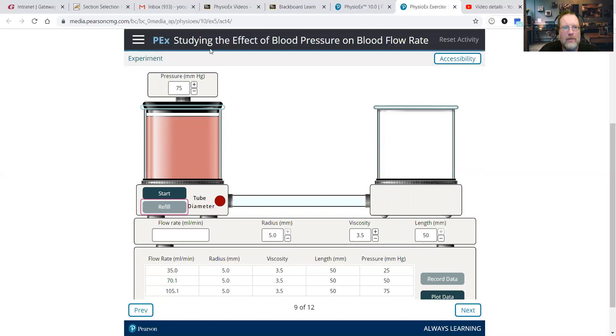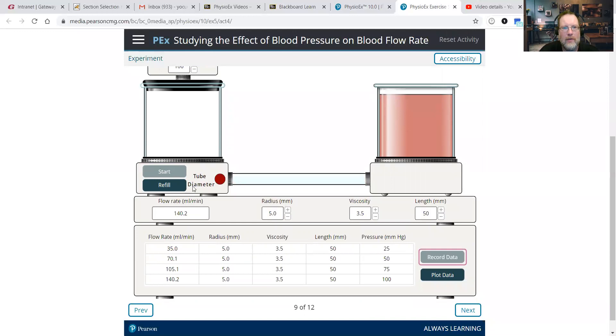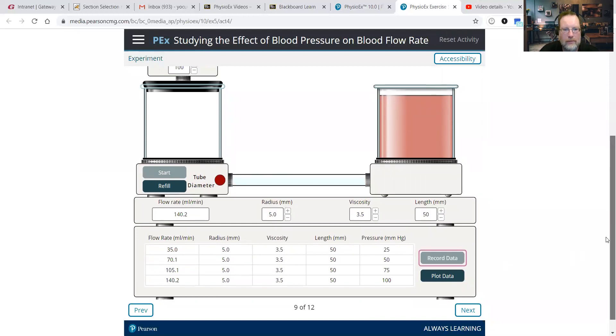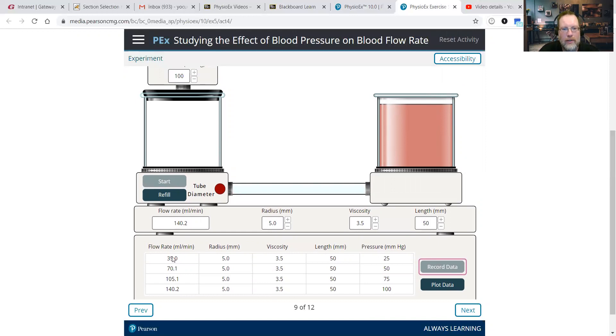So we went up 20. Let's do another one. We're going to go all the way up to 200, but there is a little bit of a pattern here. As we increase 25 millimeters of mercury of pressure, we started at 25, 35, went up to 50, went up to 70. So as we've increased by increments of 25, we see an increase in increments of flow rate of 35 millimeters of mercury.